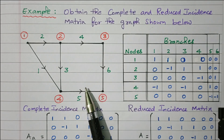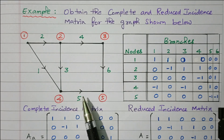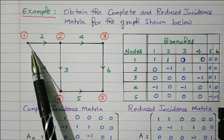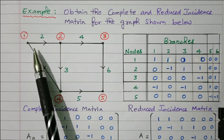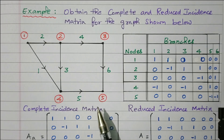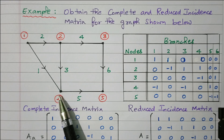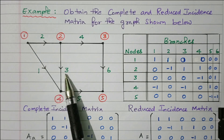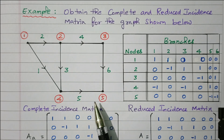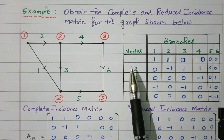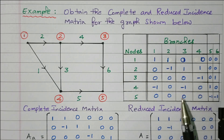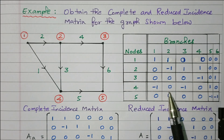This is called an oriented graph. An oriented graph is represented by lines with directions. When only lines are present with all elements replaced by lines, it is called a graph. When directions are also available, it is called an oriented graph. In this graph, the red color lines represent the nodes. There are five nodes and six branches. A node is the point where various elements are connected, and a branch is the connection between nodes. So the matrix has five rows and six columns — nodes decide the number of rows and branches decide the number of columns, giving a 5×6 matrix.